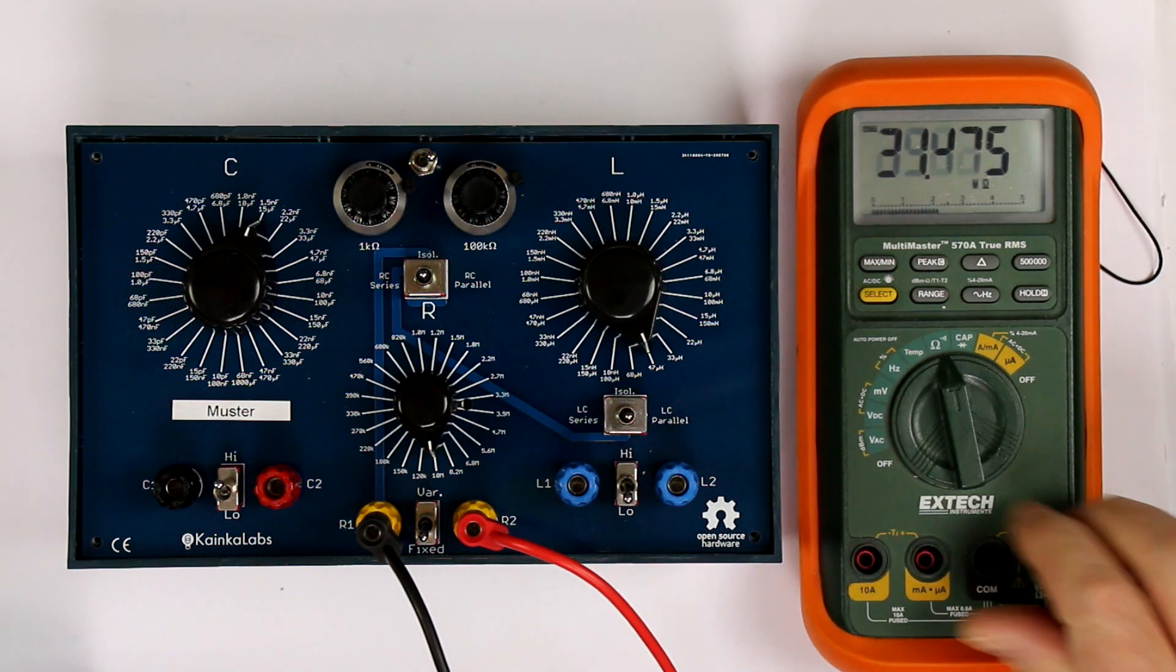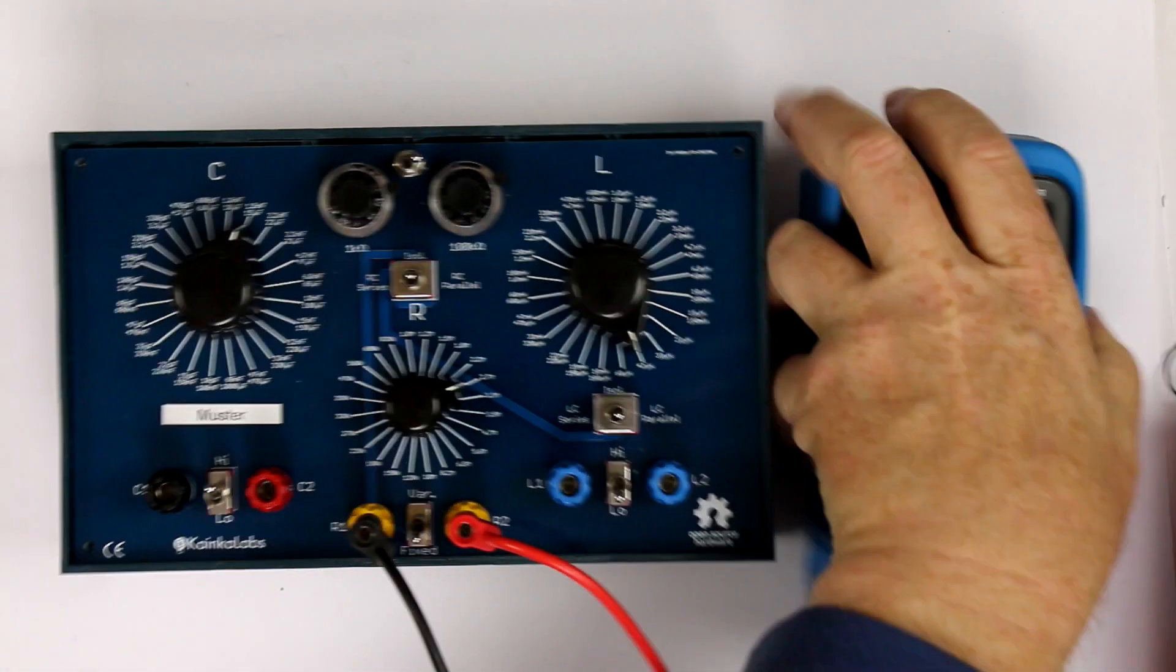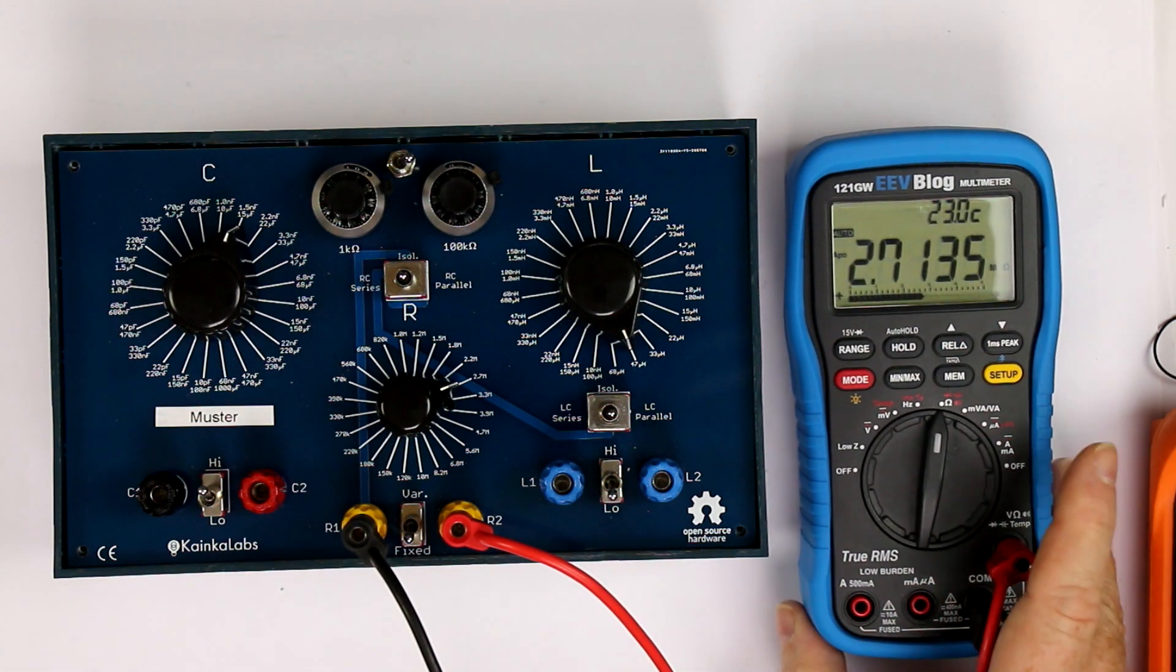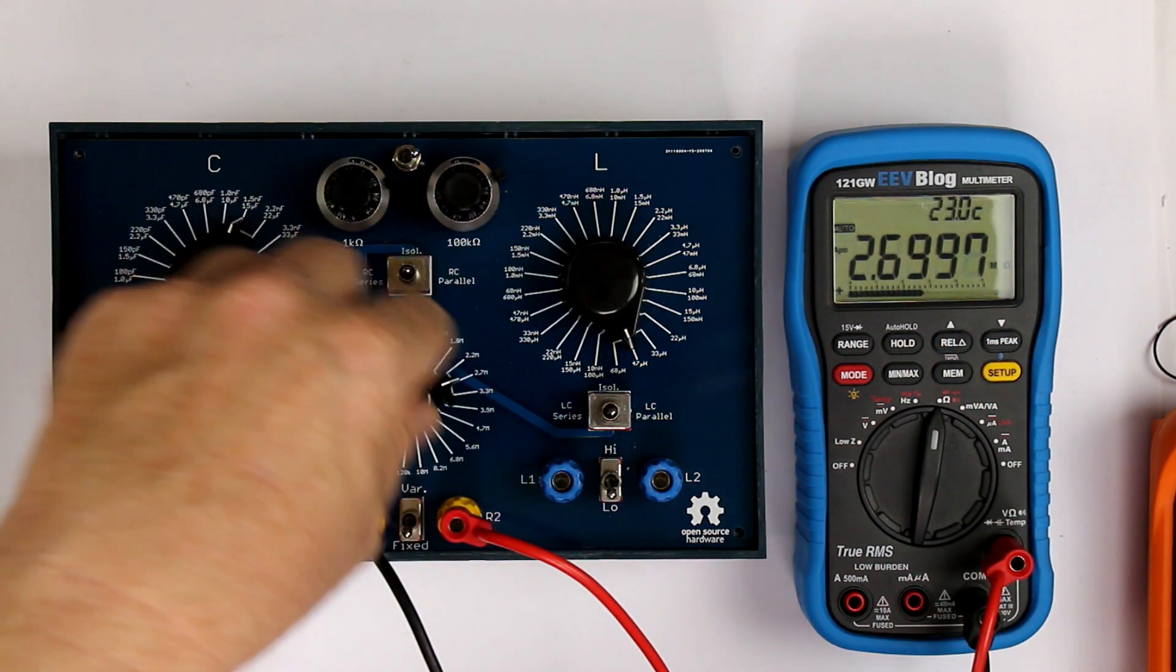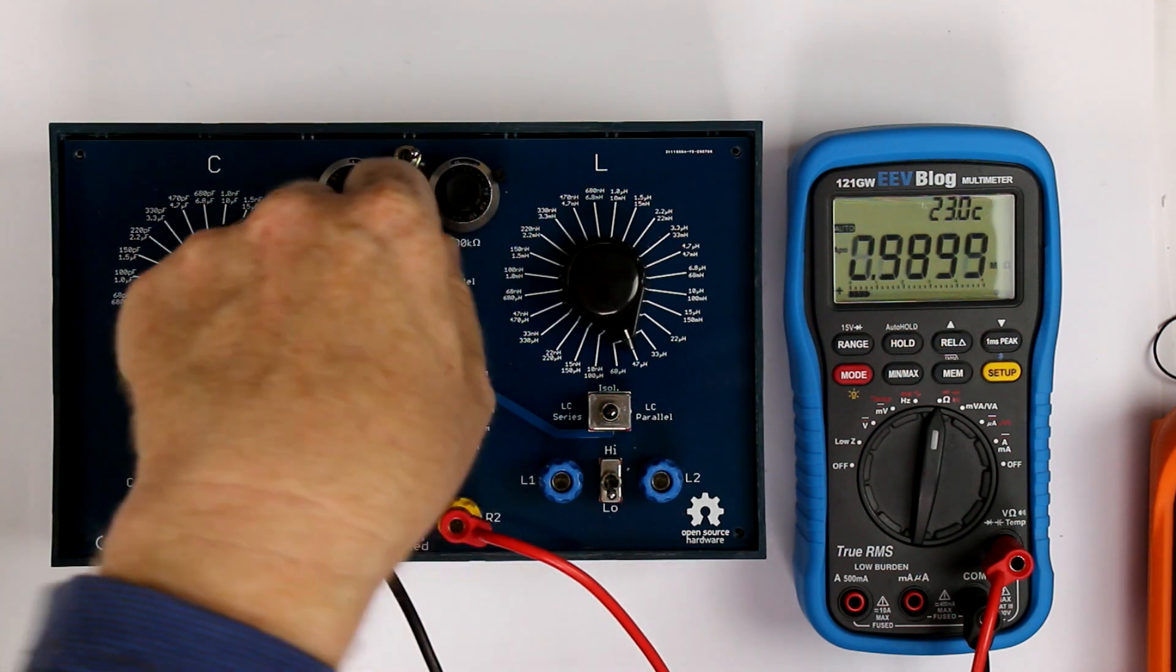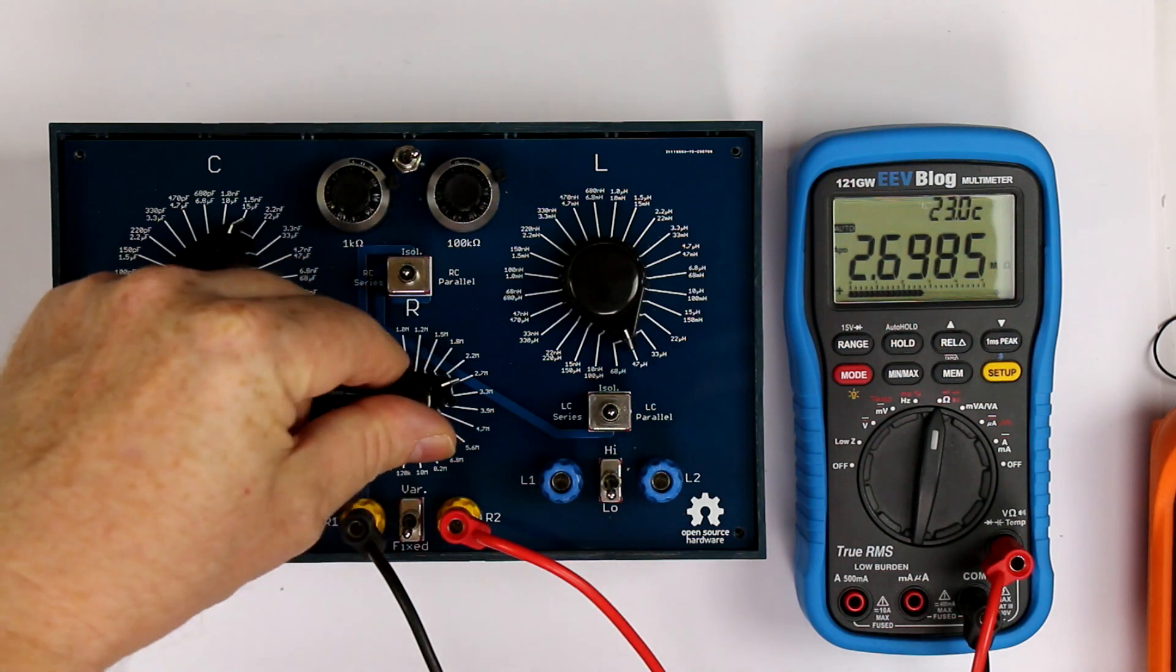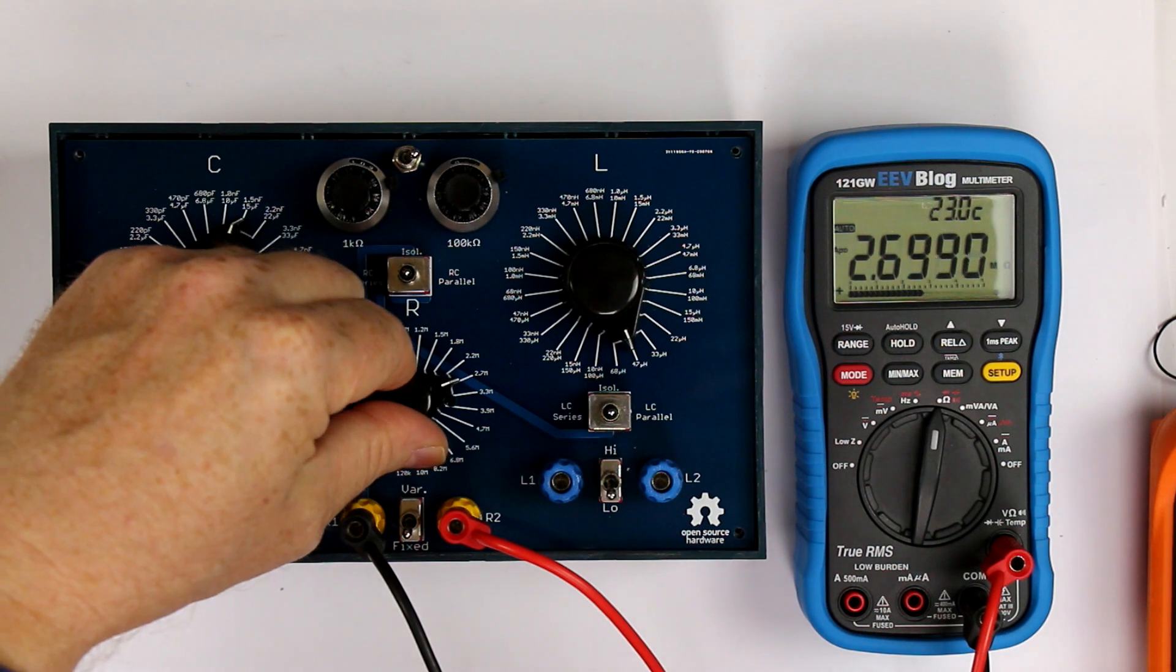Now let's exchange this with the 121 GW. Firmware is 2.0 for those of you who want to know, and at 2.0 I just have to check if the switches for the filters are in the middle position so that resistance is really isolated from capacitance and inductance.